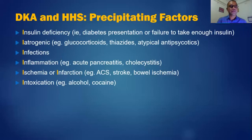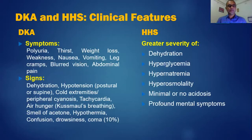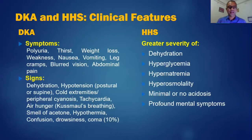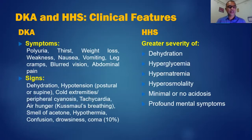DKA presents with polyuria, thirst, weight loss, weakness, nausea, vomiting, leg cramps, blurred vision, and abdominal pain. Importantly, abdominal pain can be the only clinical manifestation of DKA in a child. Signs include hypotension, dehydration, cold extremities, peripheral cyanosis, tachycardia, air hunger known as Kussmaul breathing, smell of acetone, hypothermia, confusion, drowsiness, and coma. Previously DKA was known as diabetic coma, but not all patients will be confused or comatose — a patient with DKA may even walk into the doctor's chamber.